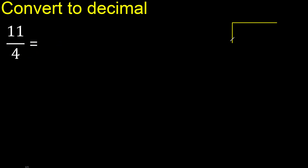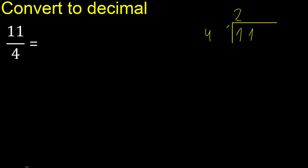11 divided by 4. 11 is not less than 4, therefore 4 multiplied by which number is nearest to 11 but not greater? 4 multiplied by 3 is 12 — 12 is greater. Multiply by 2 is 8. 8 is not greater. Subtract: 3.